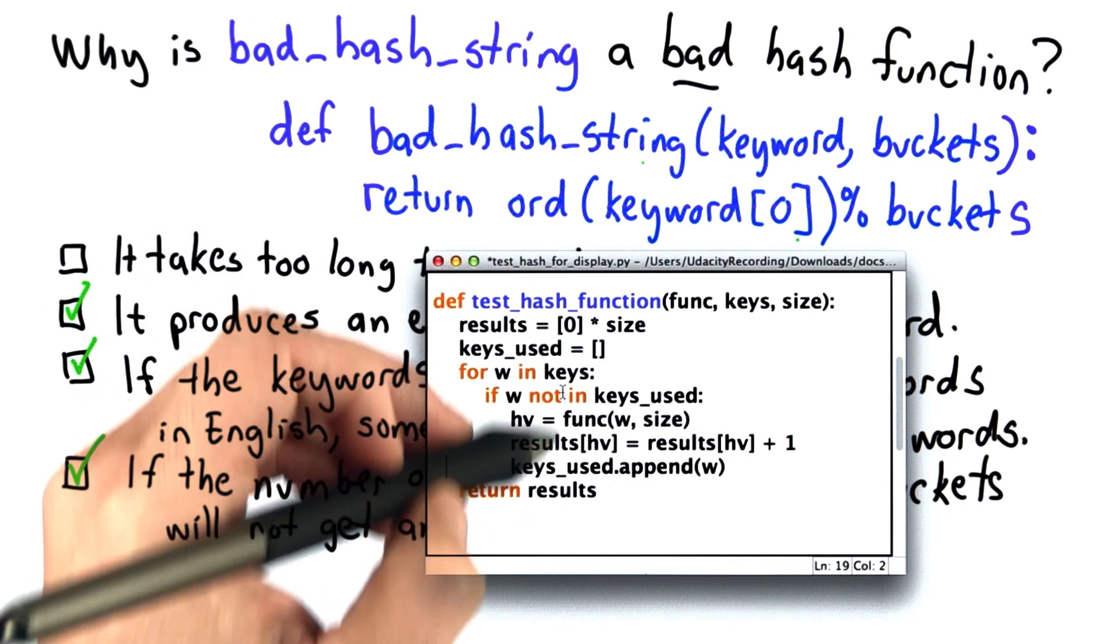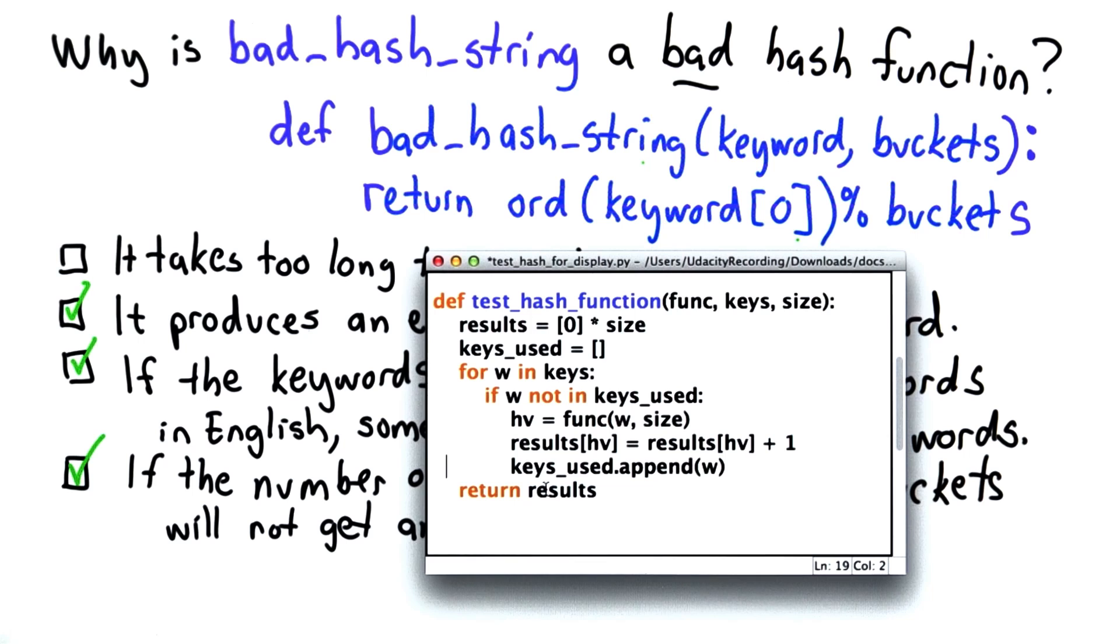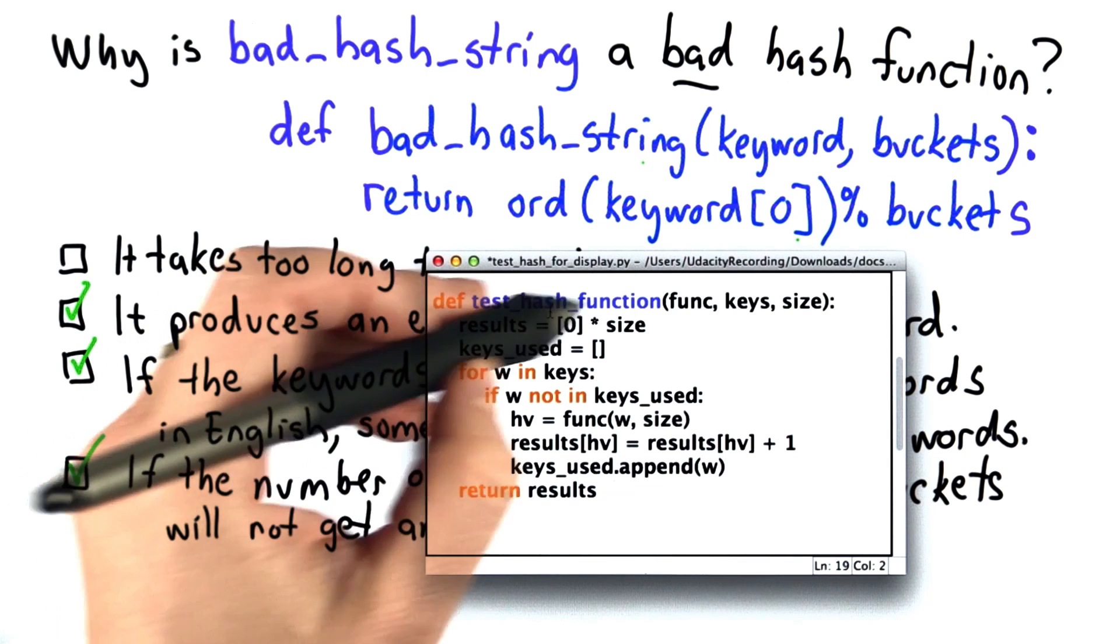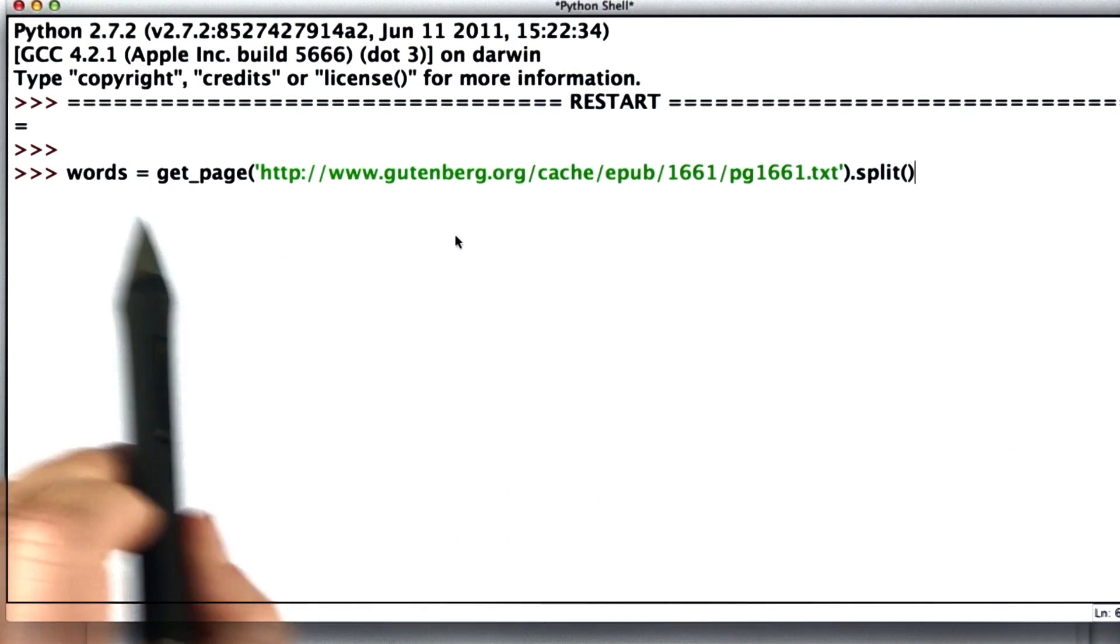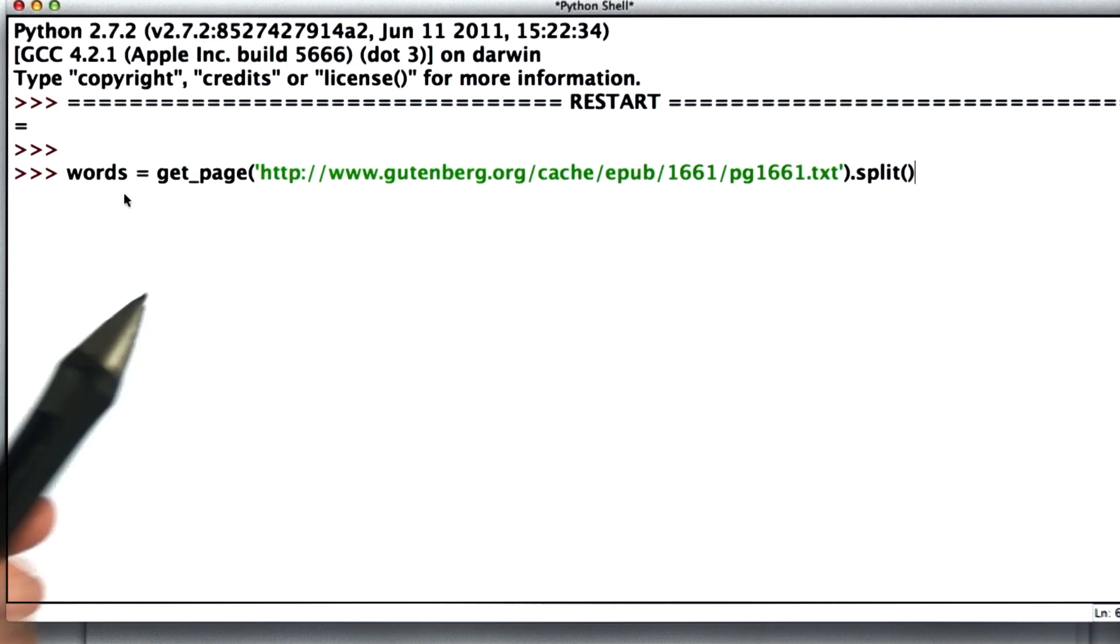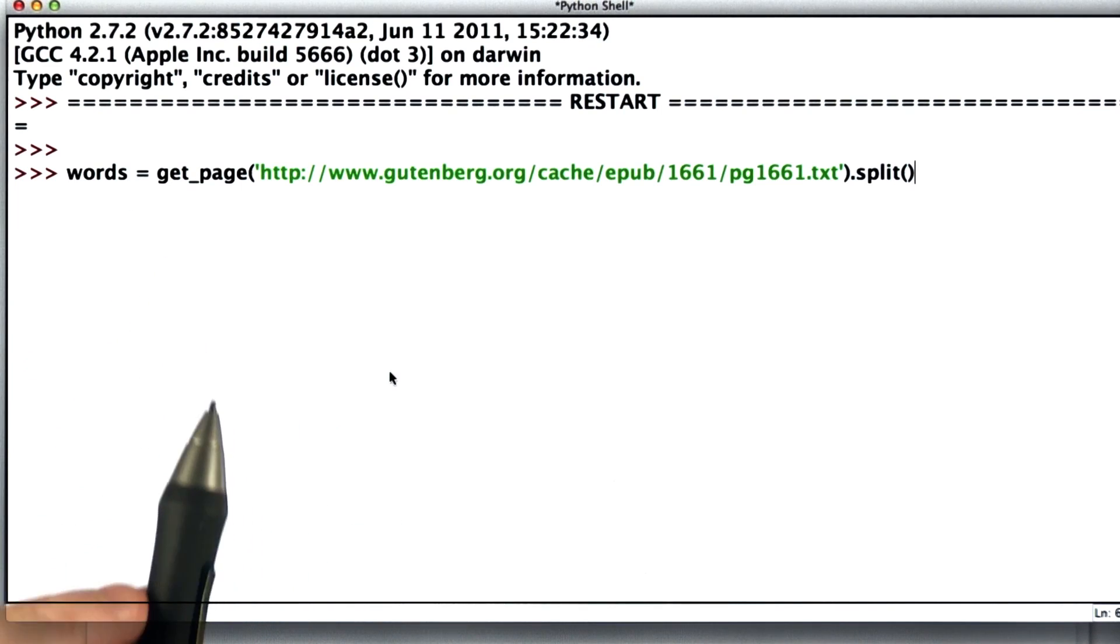So what we'll have as the result of test_hash_function is a list where the values in that list are numbers giving the number of times a key hashes to that bucket. So let's try this with an example using the bad_hash_string function. So to test our hash function, we need some content. We need content that represents the kind of words that we think we're going to be using the hash table on.